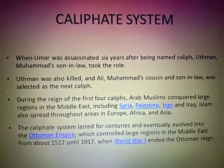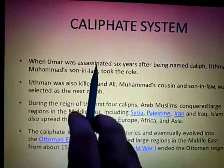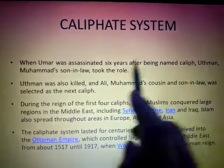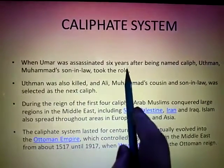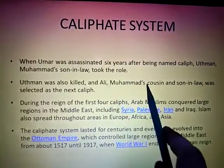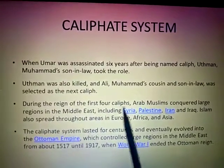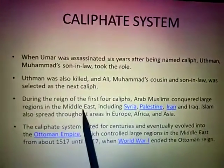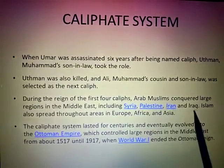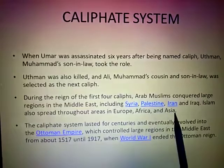The Caliphate system started when Umar was assassinated six years after being named the Caliph. After him, Uthman, Muhammad's son-in-law, came into the role. When Uthman was also killed, Ali, who was Muhammad's cousin and son-in-law, was selected as the next Caliph. During these four Caliphs, Arab Muslims conquered many parts of the Middle East, which included Syria, Palestine, Iran, and Iraq. In this way, Islam spread throughout Europe, Africa, and Asia.